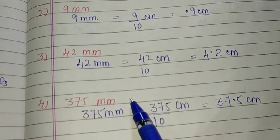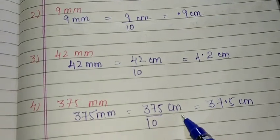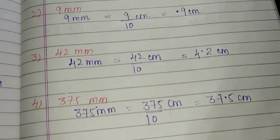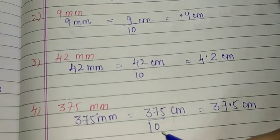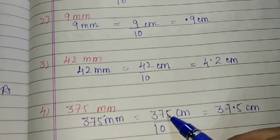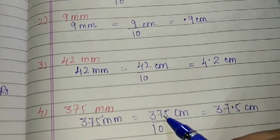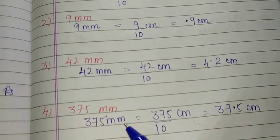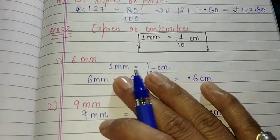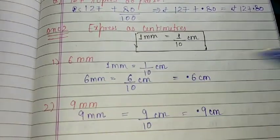Now 375 millimeter. 375 millimeter — how I will convert it into centimeter? By dividing it with 10. Downside only 1 zero is there, so upside also I will put point before only 1 number. I will put point before 5. 375 millimeter is equal to 37.5 centimeter. So students, if we have to convert millimeter into centimeter, then we divide that particular number with 10.